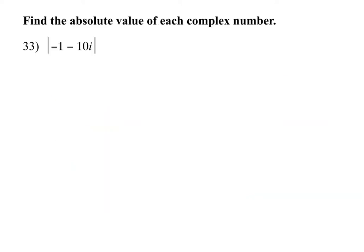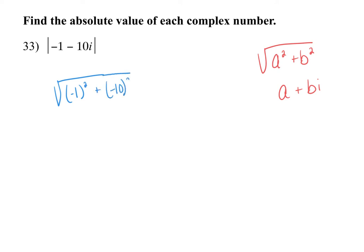The next section asks you to find the absolute value of a complex number. The formula is √(a² + b²), where a is the real part and b is the coefficient of the imaginary part. For this problem, a = −1 and b = −10. Squaring both and adding: 1 + 100 = 101. The absolute value is √101, which cannot be simplified further.